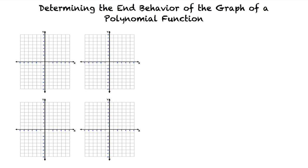There are four types of end behavior. The first is a graph that falls to the left and rises to the right. The second type is a graph that rises to the left and falls to the right. The third type is a graph with both ends rising, and the fourth type is a graph with both ends falling.